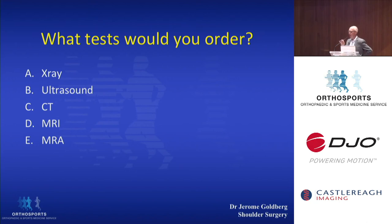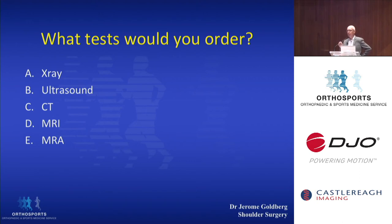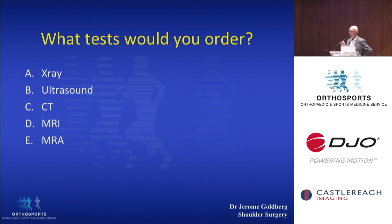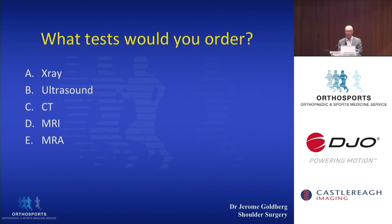Any young person who falls over with bruising around the shoulder and no fracture on x-ray has a torn rotator cuff until proven otherwise. Any young person who ruptures their long head of biceps has a statistically 50% chance of having ruptured their cuff as well — and I'm talking about a young person at 45, not an older person. The most sensitive index of a complete cuff tear is examining for loss of external rotation power. With bruising, ruptured long head of biceps, and loss of external rotation power, you can be pretty confident this patient has a full thickness cuff tear.